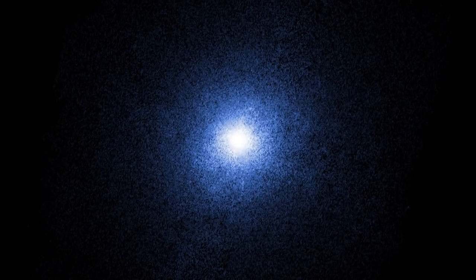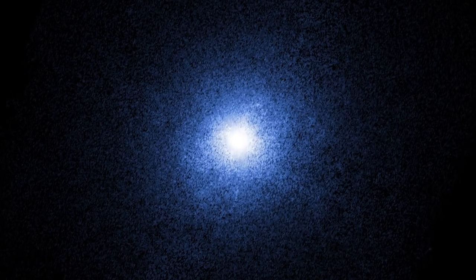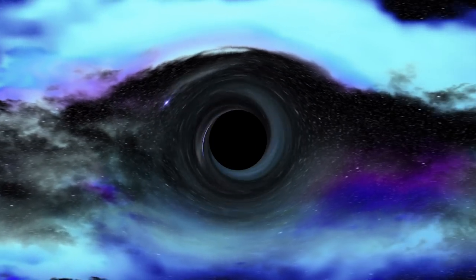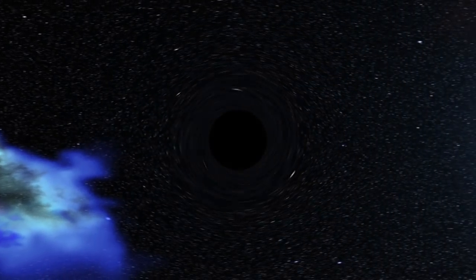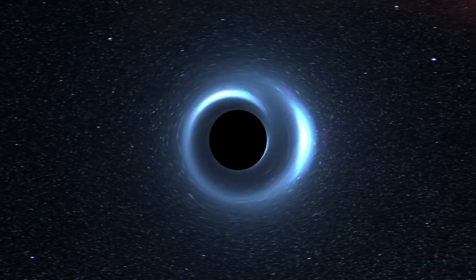Using X-ray data from Chandra, astronomers have found that the black hole's spin comes out to more than 800 revolutions per second, or more than 95% of the maximum spin possible.